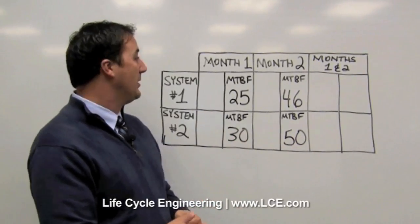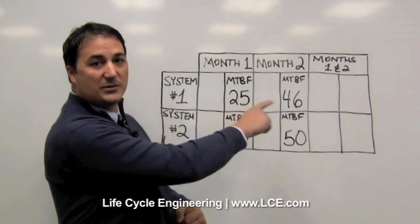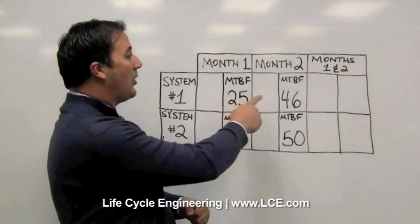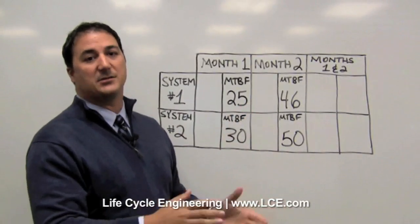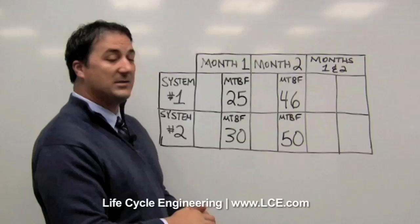Based on this information alone, you may choose to devote your resources to system one, because a lower mean time between failure indicates lower reliability. Is that the right decision?